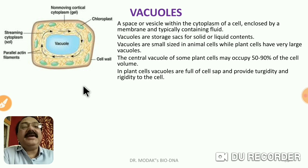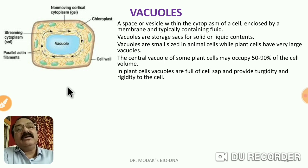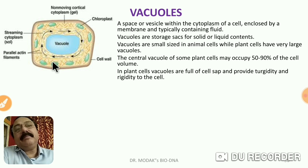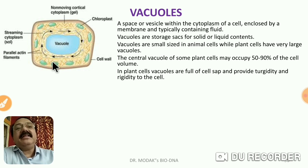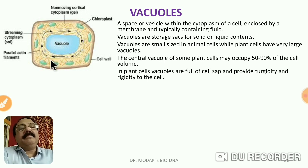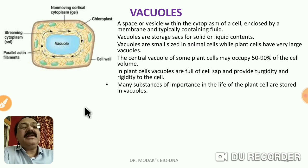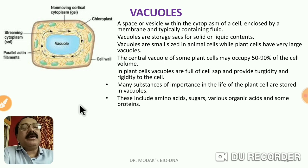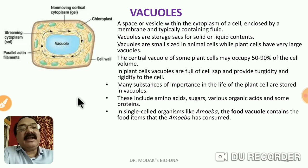The central vacuole of some plant cells may occupy about 50 to 90 percent of the cell volume. Vacuoles in plant cells are full of cell sap and provide turgidity and rigidity to the cell. Turgidity is the fully swollen condition — because of this, plant organs like buds, leaves, and branches remain erect and can trap more sunlight. If the vacuole loses water, the plant part becomes flaccid.